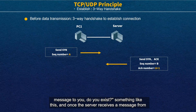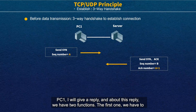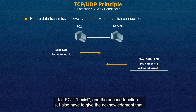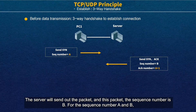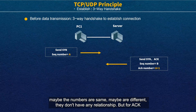When the server receives the message from PC1, it will give a reply. This reply has two functions. The first one is to tell PC1 'I exist.' The second function is to give the acknowledgement 'I received the hello message from you.' The server will send out packets with sequence number B. A and B may be the same number or different — they don't have any relationship.